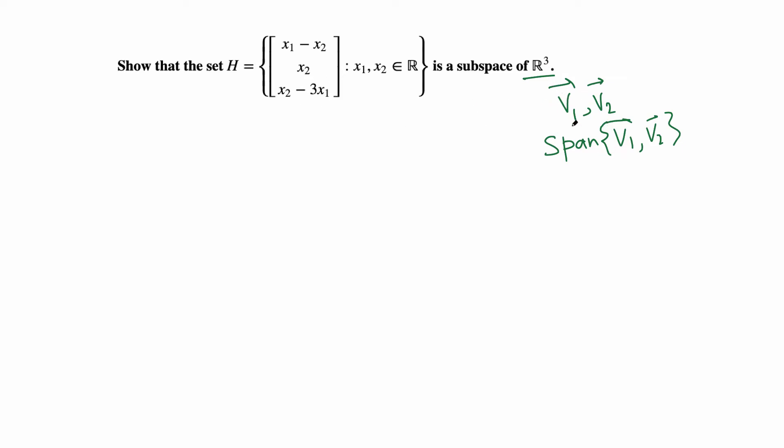I can write this element in parametric vector form. The element is x1 minus x2, x2, x2 minus 3x1. We have two variables x1 and x2, so we can factor x1 out of some vector and x2 out of some vector. The first entry has one copy of x1, zero, and negative 3x1. For x2, it's negative 1x2, one copy of x2, and 1x2.